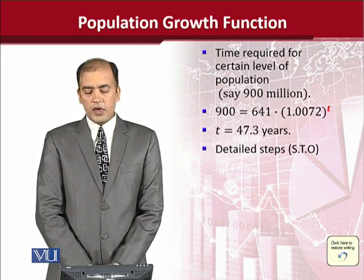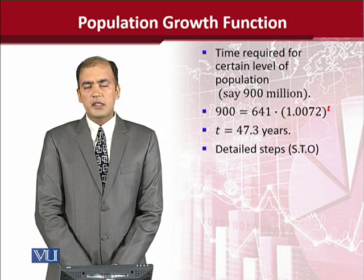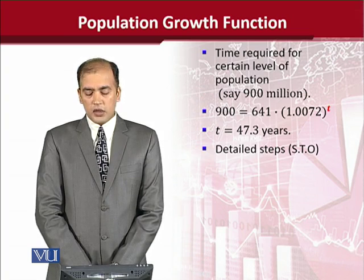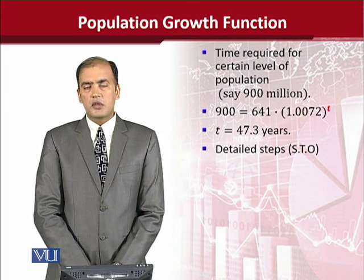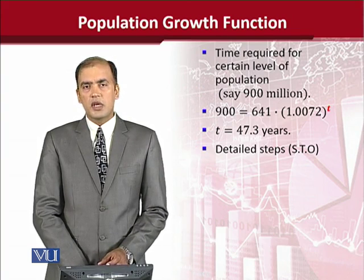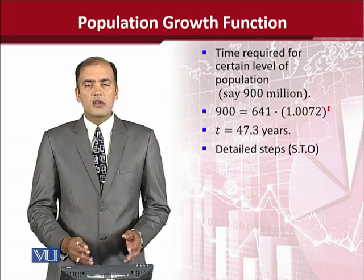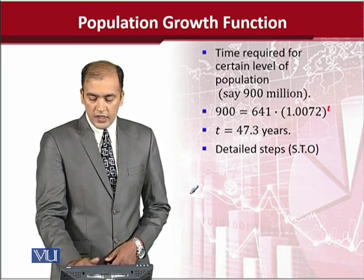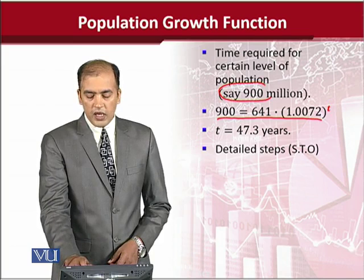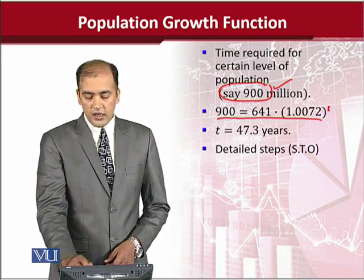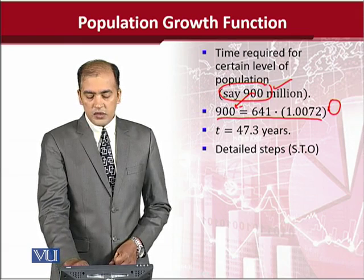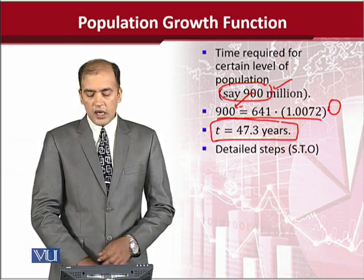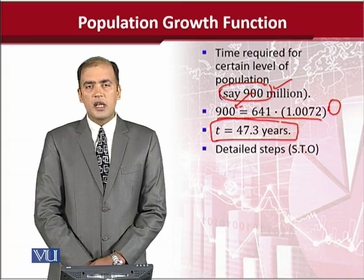Another way of using this exponential function is to guess the time required for the population to reach a certain level — for example, to double, or to reach 900 million. For that, we substitute 900 in place of population and calculate the value of t. Using the same function with this target value, we put 900 in place of population and t is the unknown. Once we put the values and simplify, we get the time at which the population shall reach the level of 900 million.